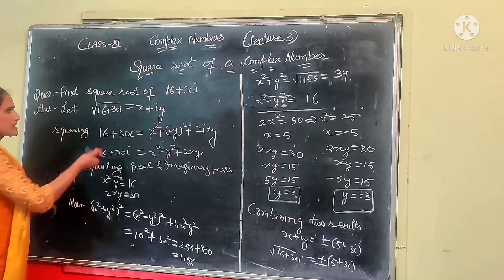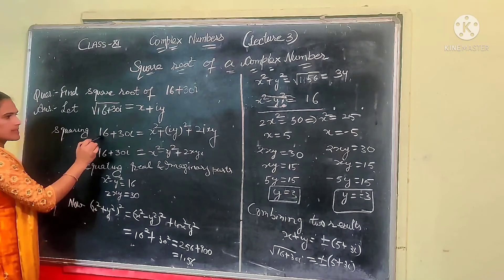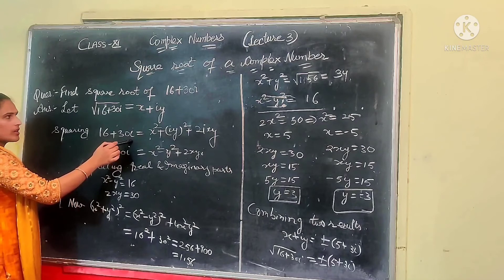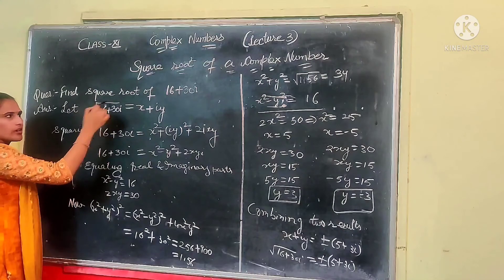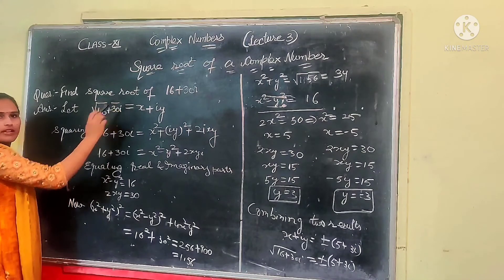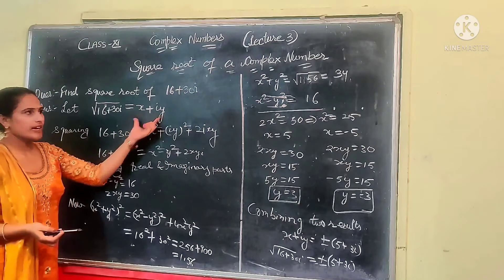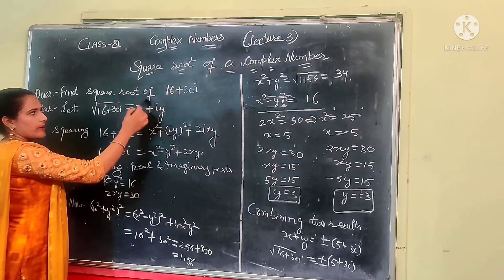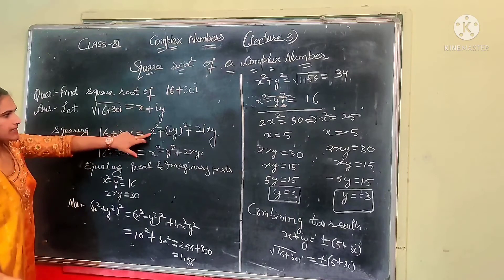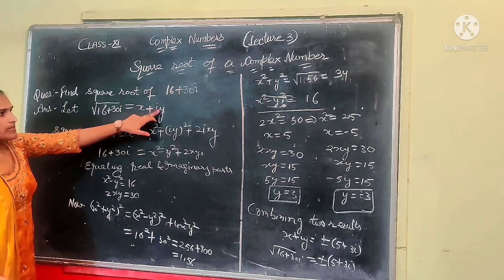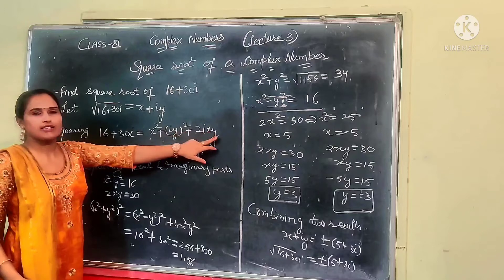Now, squaring on both sides, we have 16 plus 30 iota on the left hand side — the square root and square cancel each other. On the right hand side, (x plus iota y) squared equals x squared plus (iota y) squared plus 2 iota xy, according to the (a plus b) whole square formula.